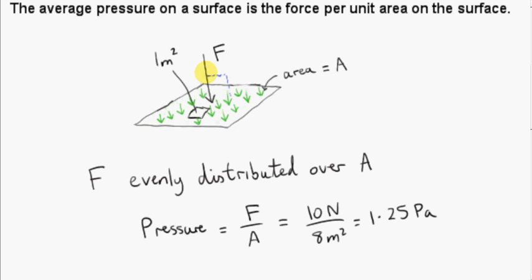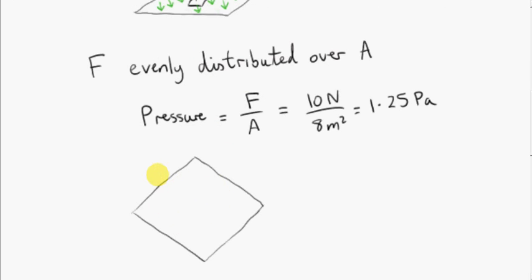It doesn't matter how small the unit is either — it doesn't have to be a square meter. We could imagine a square millimeter of area, which is much smaller, and we will find that the force exerted on a square millimeter of area doesn't change. It's the same everywhere if the pressure is constant on the surface. In general, when we talk about the pressure on a surface due to a force, we are talking about the perpendicular component of the force — the component of the force that's perpendicular to the surface.